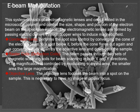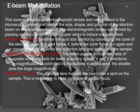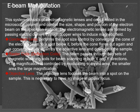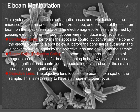Electron beam manipulation: this system consists of electromagnetic lenses and coils located in the microscope column that control the size, shape, and position of the electron beam on the specimen surface. Electromagnetic lenses are formed by passing electric current through copper wires to induce a magnetic field. The condenser lens controls the spot size by converging the cone of the electron beam. The beam then passes through two sets of magnetic scanning coils for scanning in X and Y directions. Magnification is controlled by modulating the scan area — the smaller the area, the larger the magnification. The objective lens focuses the beam onto a spot on the sample.